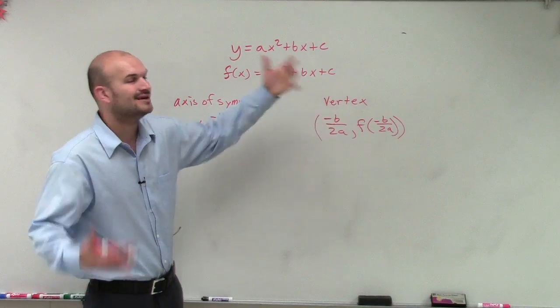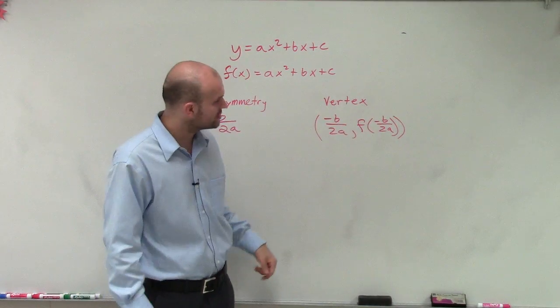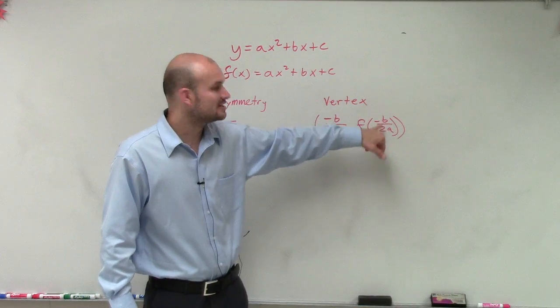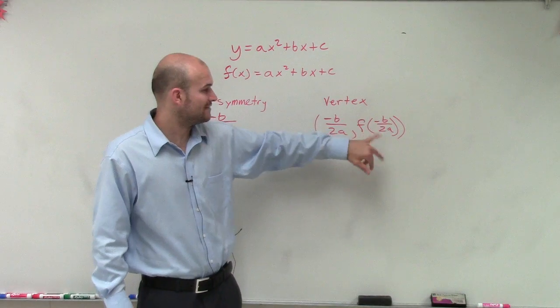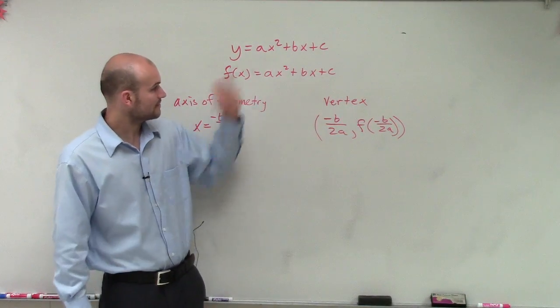whatever you plug in in that parentheses, that's what you plug in there. So it's really the same thing as just me showing you in a table, but I wanted to use function notation. You find your x and then you plug it into your function to be able to find the output or the y value. So that's how you find the axis of symmetry and the vertex in that form.